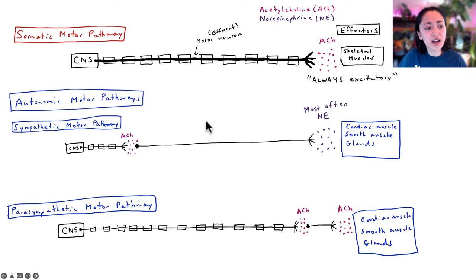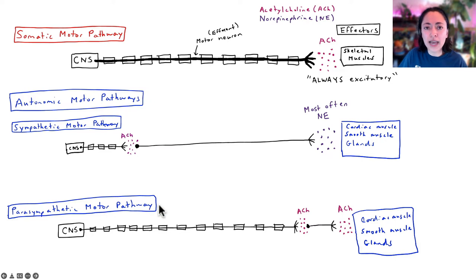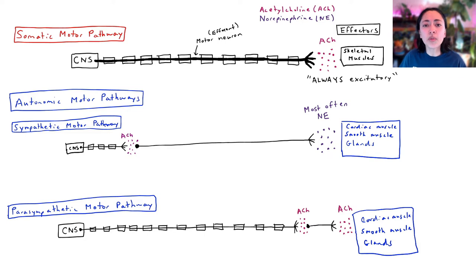The autonomic motor pathway is divided into two separate divisions. The sympathetic motor pathway is associated with our fight-or-flight response and is most active in times of physical or emotional stress. The parasympathetic motor pathway is our rest-and-digest phase and is most active when our body is at rest and putting more energy towards digesting food.